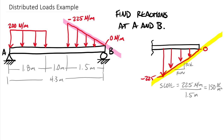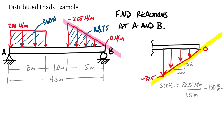So we want to find the areas. The area of the first (rectangular) load is 200 times 1.8 equals 360 newtons. The area of the triangular load is 225 times 1.5 divided by 2, giving 168.75 newtons. The centroid of the rectangle is at half the base — 0.9 meters from the left end. The centroid of the triangle is one-third from its base face, so 1.5 divided by 3 equals 0.5 meters from the right side, placing it 3.3 meters from the left end.